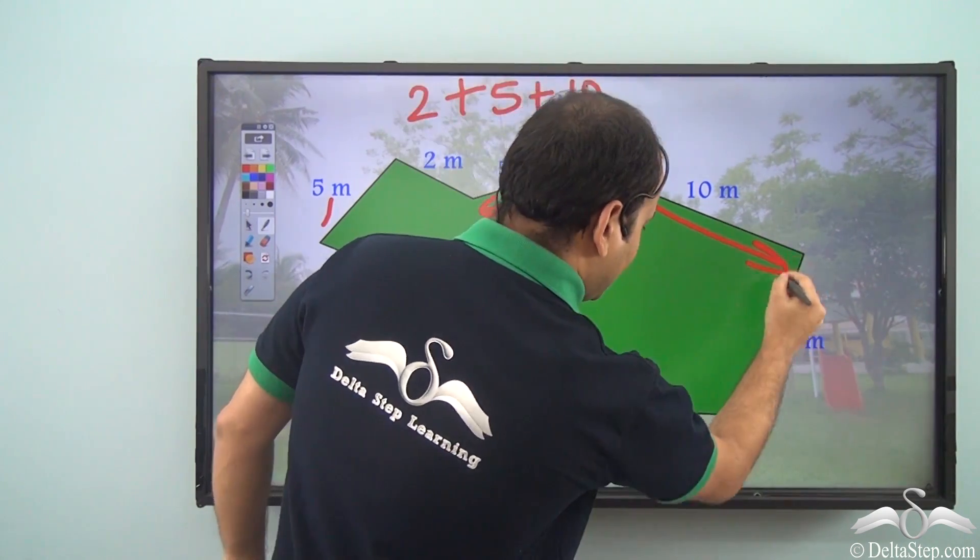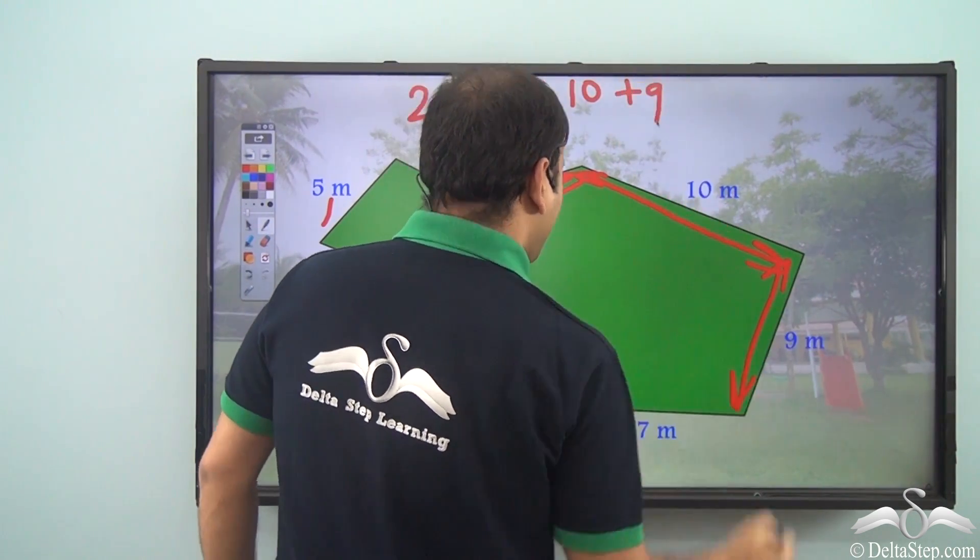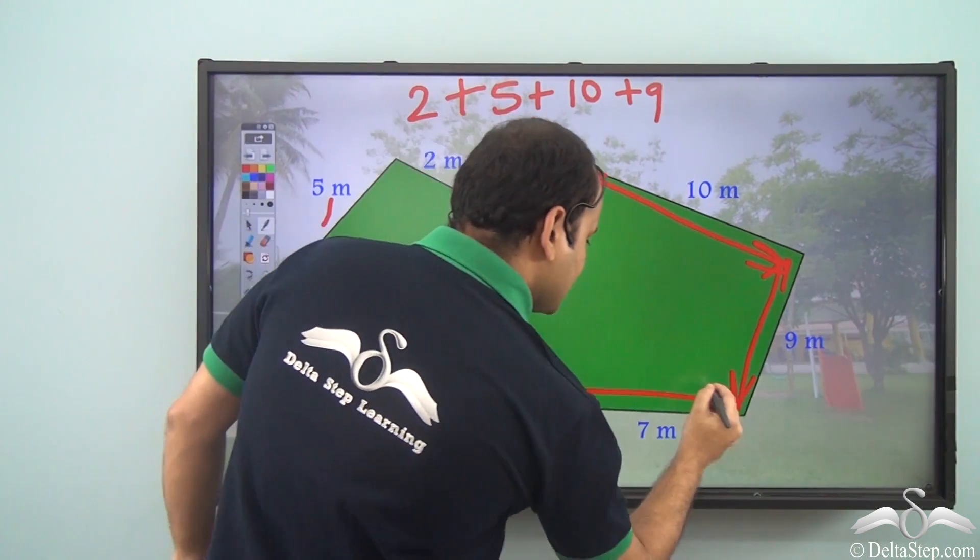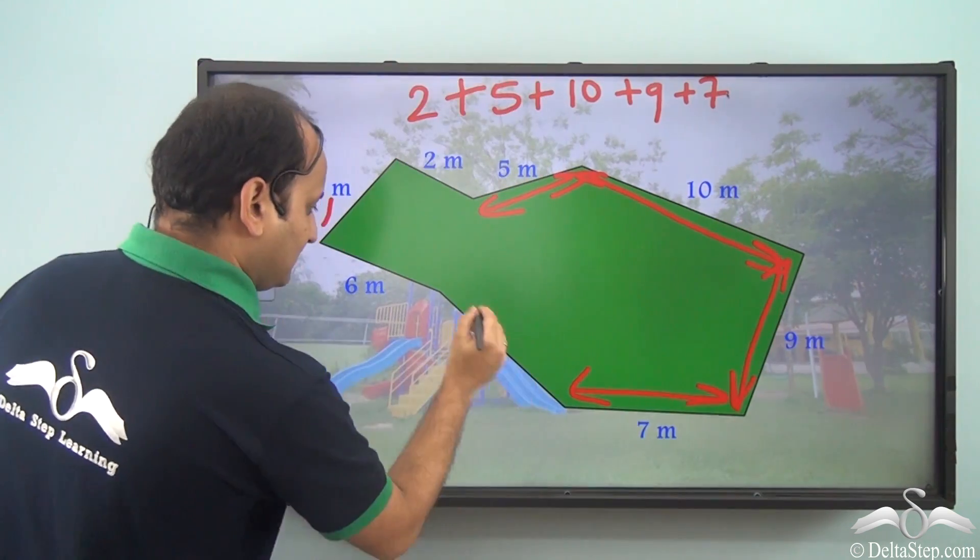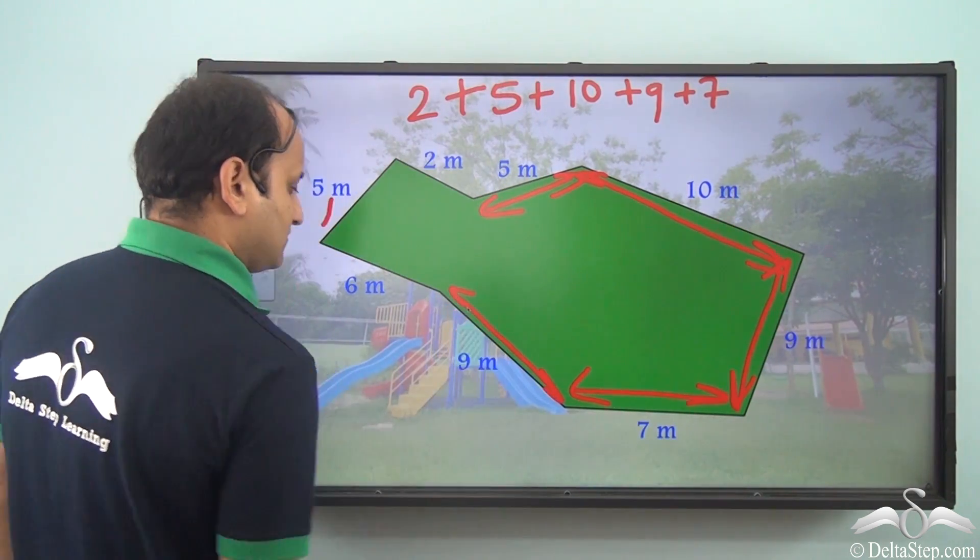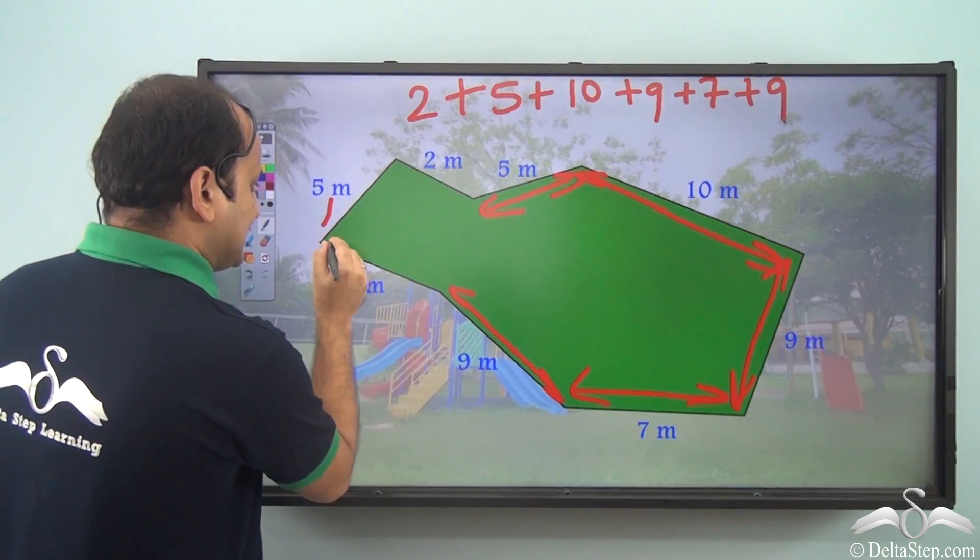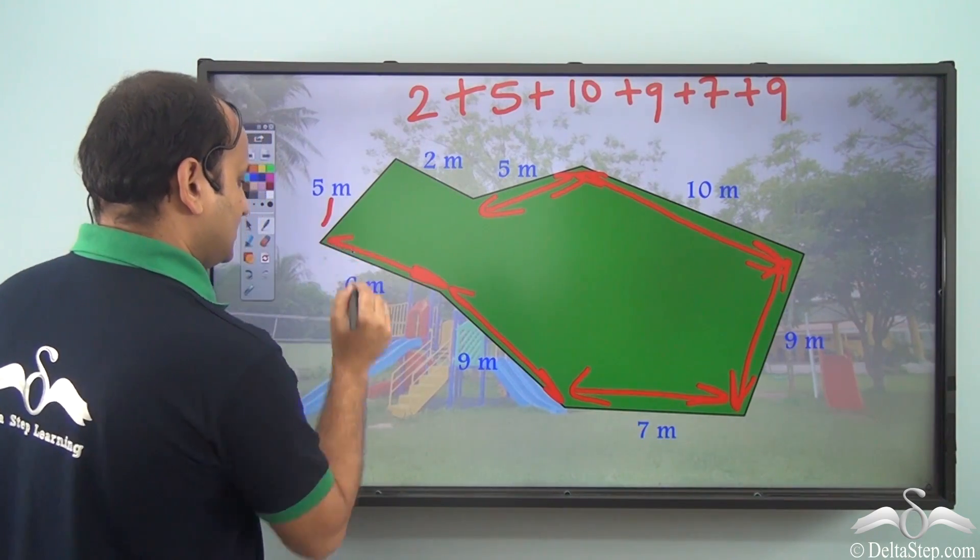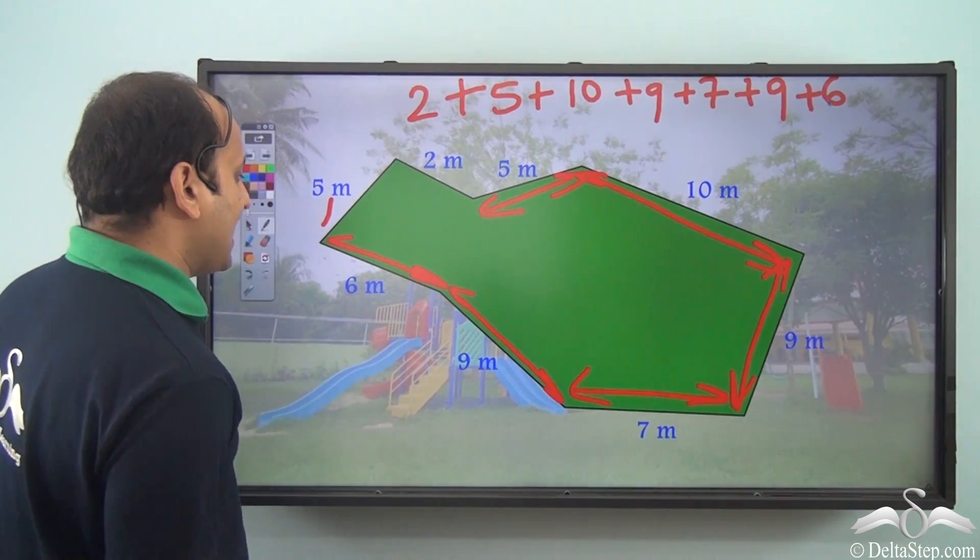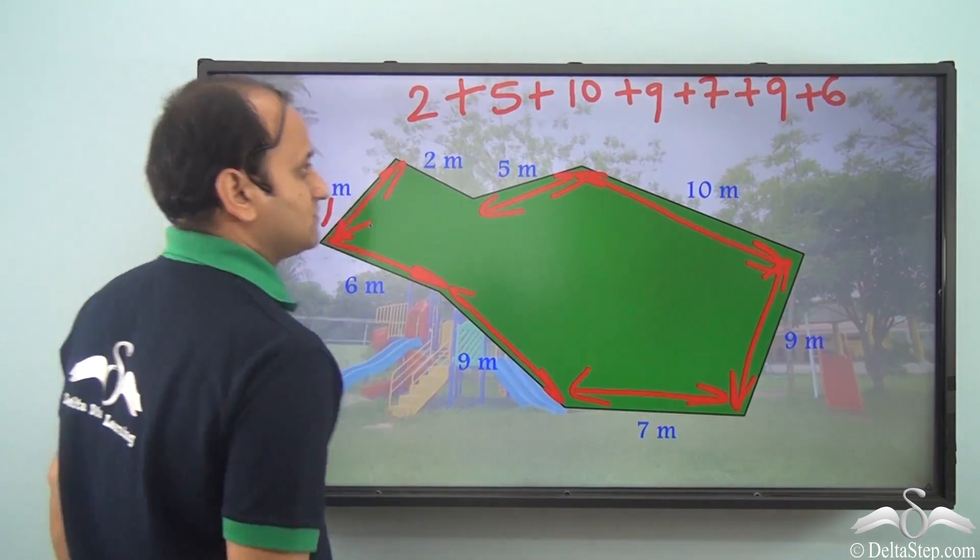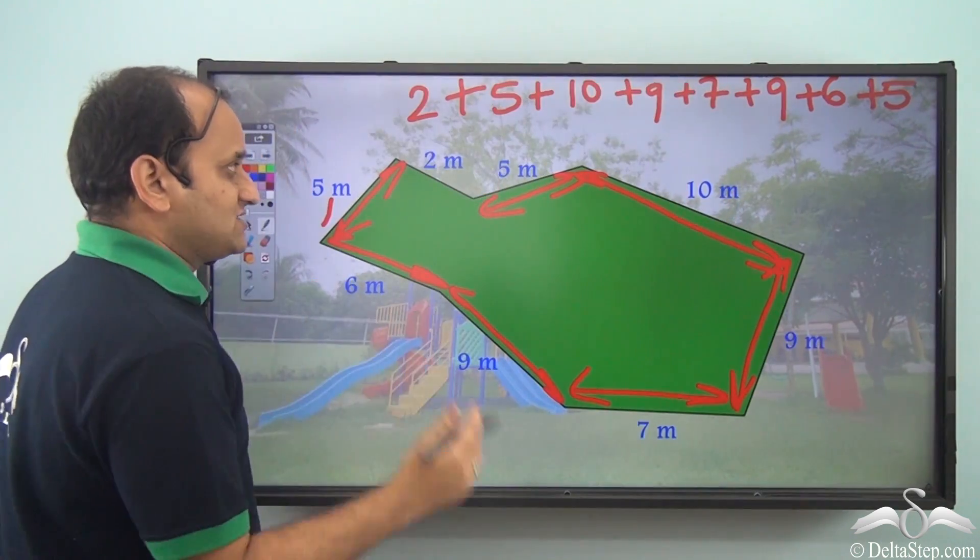Then this is 9 meters. 9. Then I have 7 meters here, so plus 7. Then 9 meters again, so plus 9. Then 6 meters here, so plus 6. And then I have 5 meters here. So what is the perimeter?